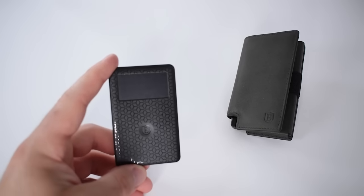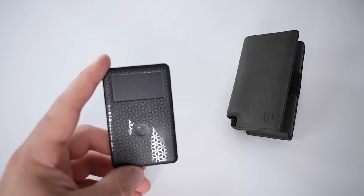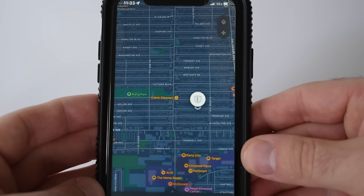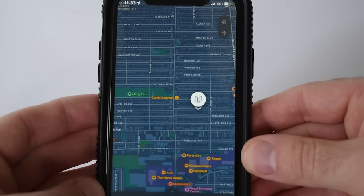The coolest part about this wallet is if you lose it, you can track its location using the solar-powered card tracker. A three-hour charge lasts a full two months and is voice activated using Siri, Alexa, or Google.